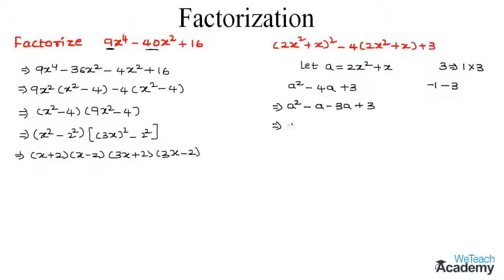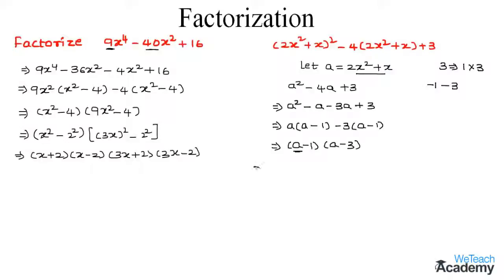Take a as a common factor to get a into a minus 1, and by taking minus 3 as a common factor we get minus 3 into a minus 1. Again, by taking the group a minus 1 as a common factor we get a minus 1 into a minus 3. Now replace the value of a, which is 2x square plus x. So we get 2x square plus x minus 1 into 2x square plus x minus 3.